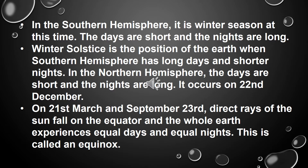On 21st March and September 23rd, direct rays of the sun fall on the equator and the whole earth experiences equal days and equal nights. This is called an equinox.